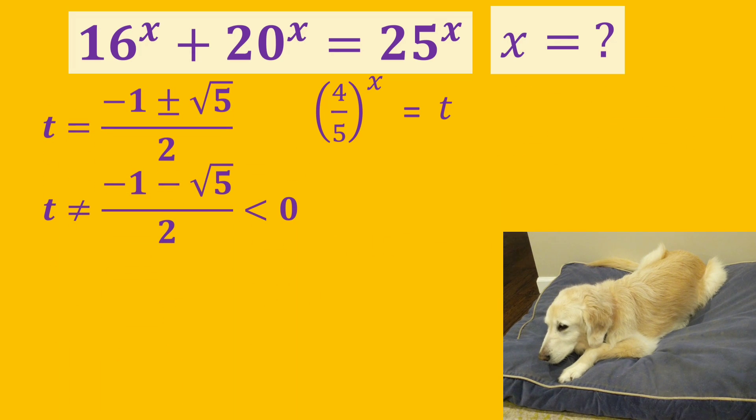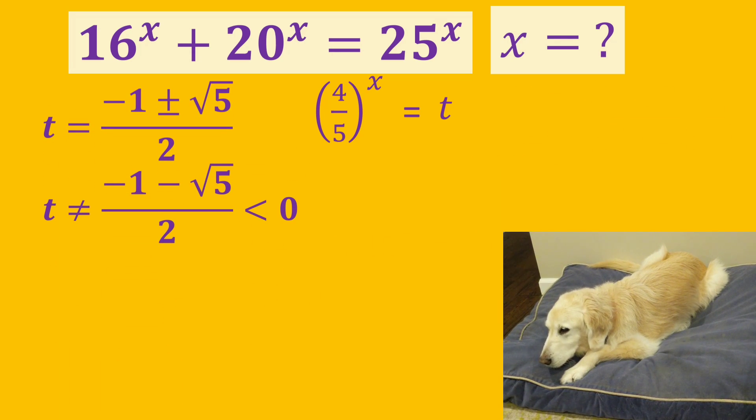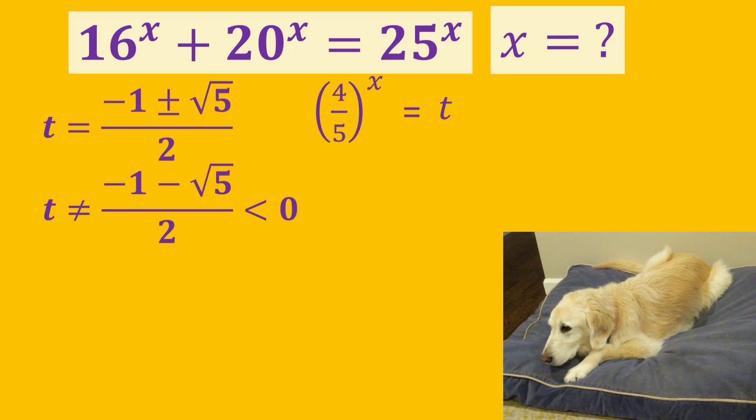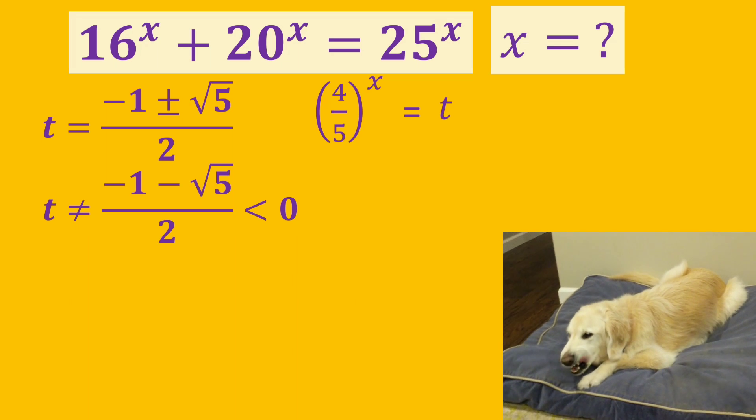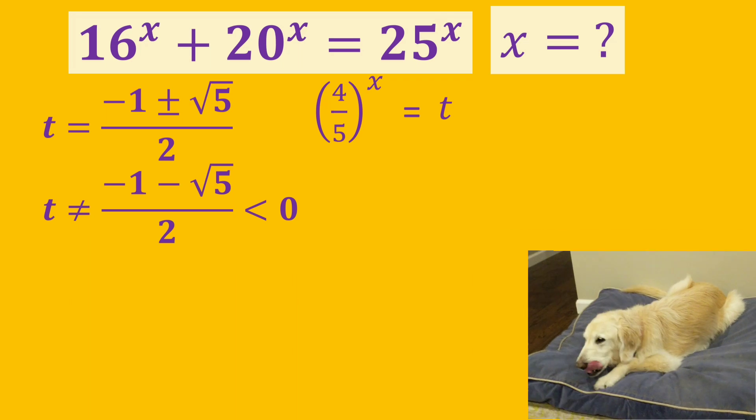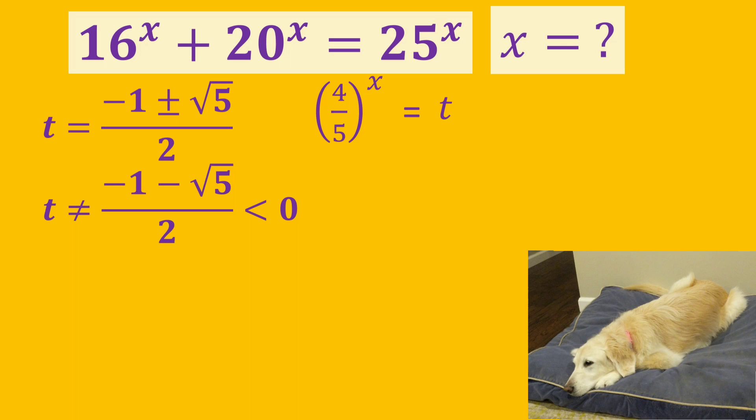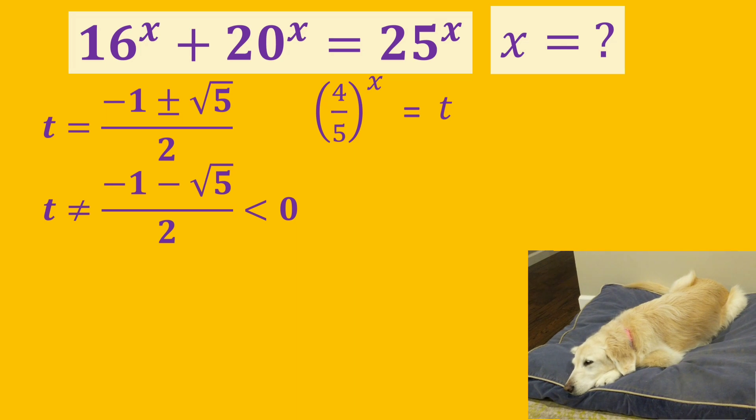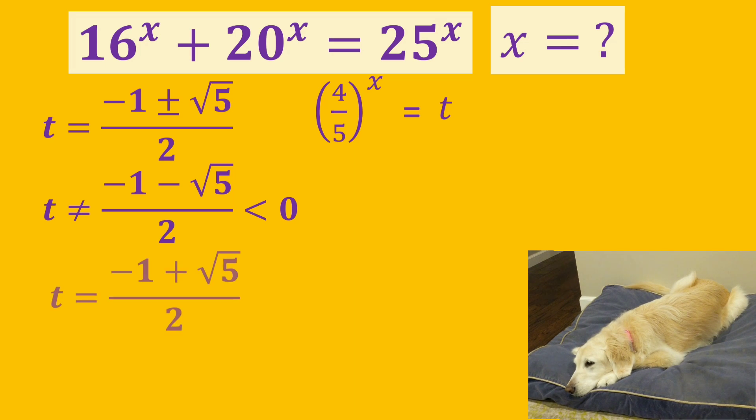The first value of t is minus 1 minus square root of 5 all over 2, which is less than 0. But, because t is also equal to 4 over 5 to the power of x and this value is always positive, t cannot be equal to a negative number. The second value of t is minus 1 plus square root of 5 all over 2, which is greater than 0.